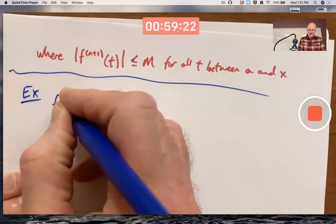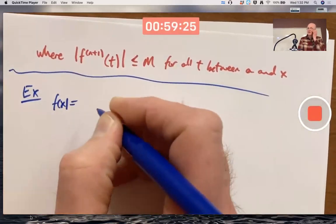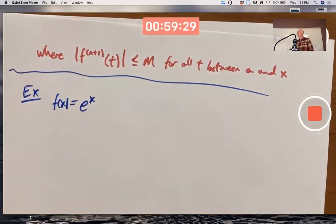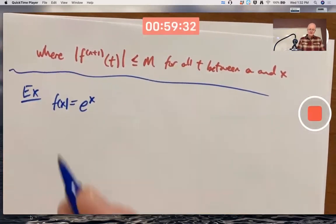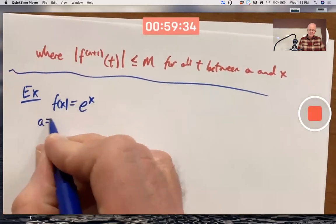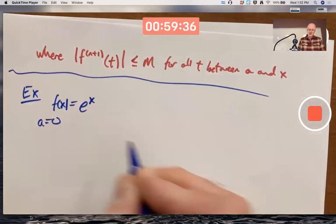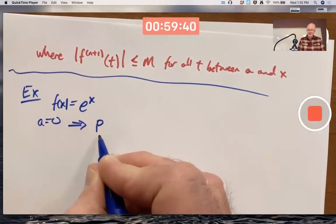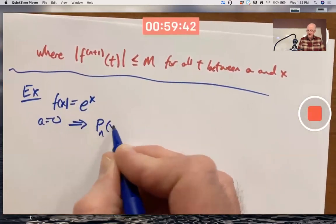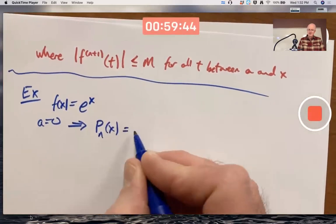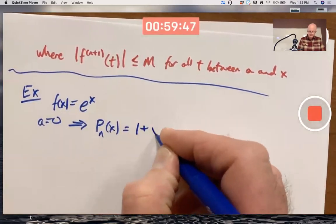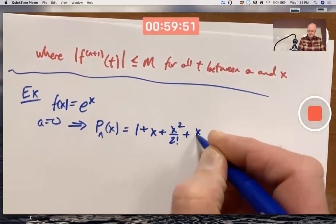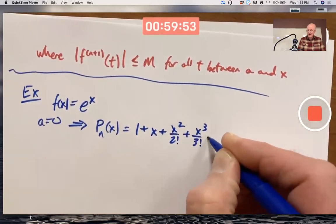So here's our example for today. Let's let f of x be our favorite function to differentiate, e to the x. Let's let a equal 0, so that we're talking about the Taylor series or Taylor polynomials centered at 0. This is going to start out just like the Taylor series. However, it is a Taylor polynomial.